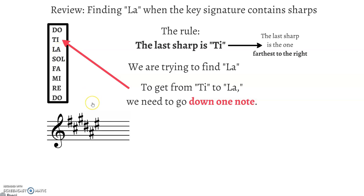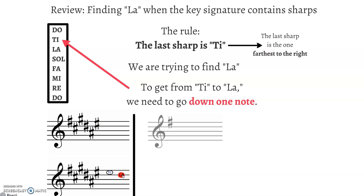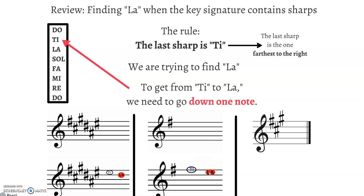So if we have this key signature, La is here. In this example, La is here. In this example, La is here. Okay, that's our starting point for this lesson.